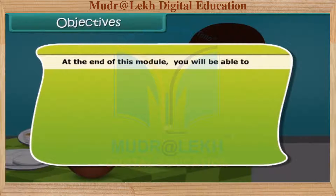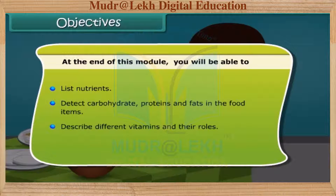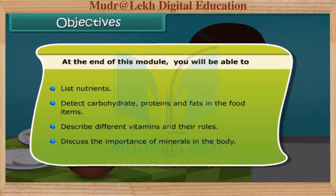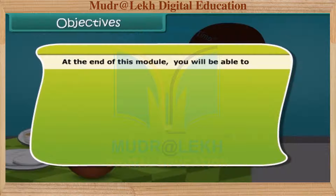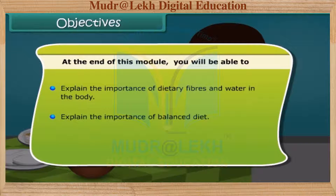Dear friends, at the end of this lesson, you will be able to list nutrients and detect carbohydrates, proteins and fats in the food items. You will also be able to describe different vitamins with their roles and discuss the importance of minerals in the body. In addition to this, you will also be able to explain the importance of dietary fibers and water in the body, explain the importance of balanced diet and define deficiency diseases.